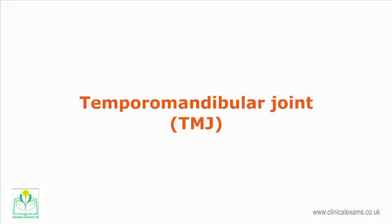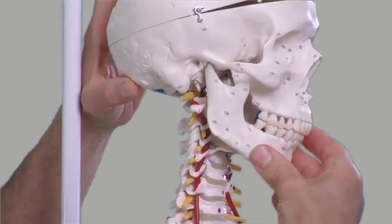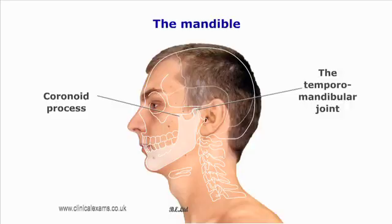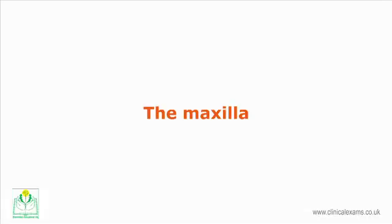The temporomandibular joint, or TMJ, is a synovial modified hinge articulation formed superiorly by a fossa in the temporal bone and inferiorly by the rounded condyle of the mandible. The TMJ is located just anterior to the tragus of the ear. It can be palpated whilst the mandible is elevated and depressed. This manoeuvre exposes the mandibular condyle under the zygomatic arch, and a fibrocartilaginous disc becomes palpable during full depression as it protrudes during this manoeuvre.